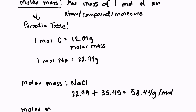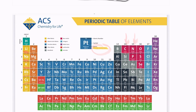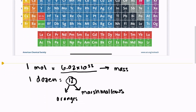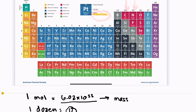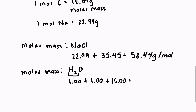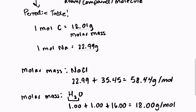We can do the same thing for a molecule. What about the molar mass of H2O? We look at our periodic table — hydrogen is number one, all the way on the left, with a mass of 1.00 grams per mole. So 1.00 plus 1.00 for the two hydrogens, plus the mass of oxygen at 16.00, gives us 18.00 grams per mole. There are 18.00 grams in one mole of H2O, and the unit here is grams per mole.